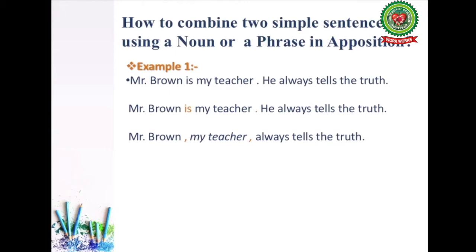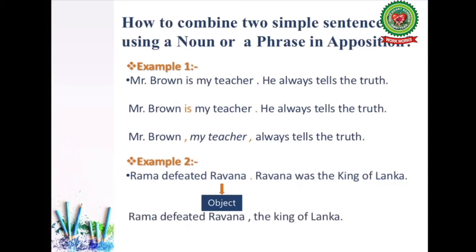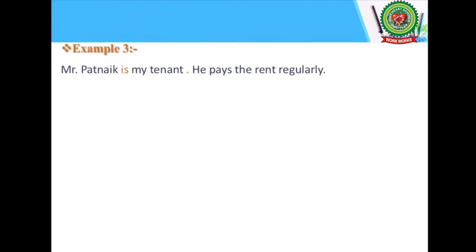Example two: 'Rama defeated Ravana. Ravana was the king of Lanka.' Here the additional information is about Ravana, the object of the first sentence — that he was the king of Lanka. We remove the verb 'was' and write: 'Rama defeated Ravana, the king of Lanka.' Example three: 'Mr. Patnik is my tenant. He pays the rent regularly.' In the same way, we remove the verb 'is' and put commas. Our answer: 'Mr. Patnik, my tenant, pays the rent regularly.'